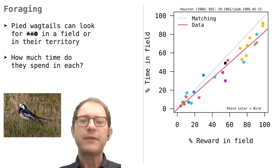As in the previous graph, the dotted line represents perfect matching. We see that the data are pretty close to the dotted line, but the best fitting line is actually a bit less steep. It's the red line in the graph. This means that on average, birds prefer to spend a bit more time in their own territory than was predicted by the matching law.